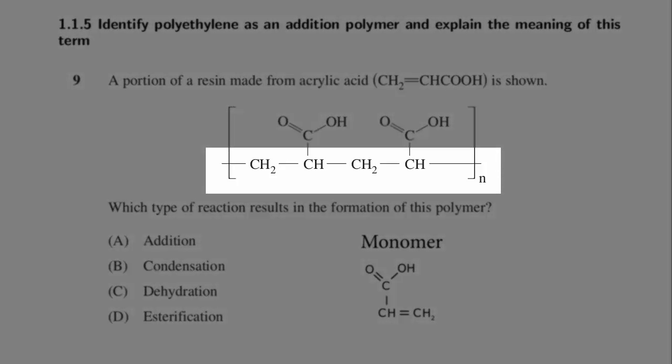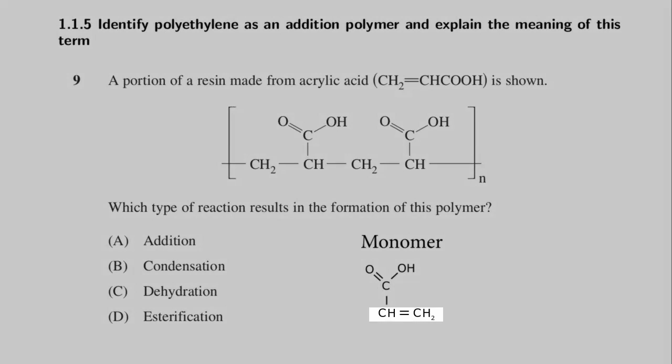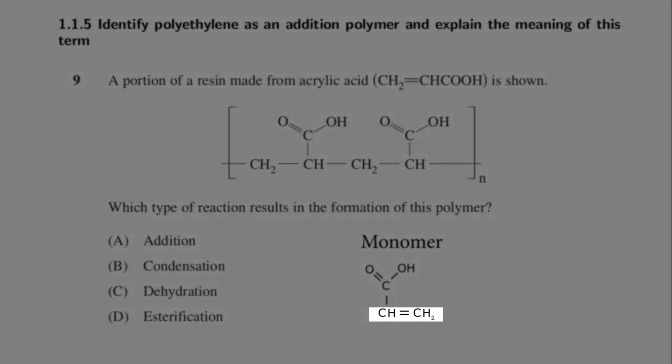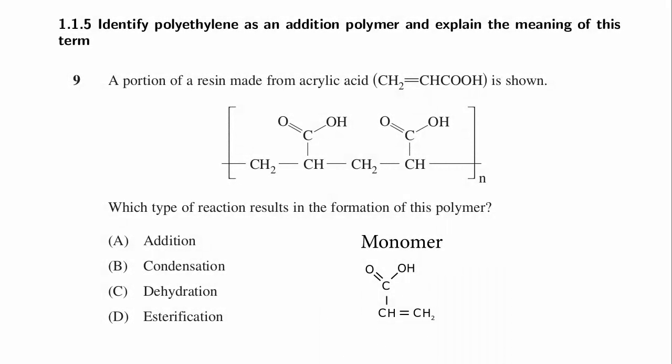We can see here that there are no oxygen molecules linking the original monomers, so we could go ahead and answer addition by a process of elimination. To double check, we can confirm that the monomer has a double bond, which has been broken to provide the structural links between monomers in the final polymer molecule.